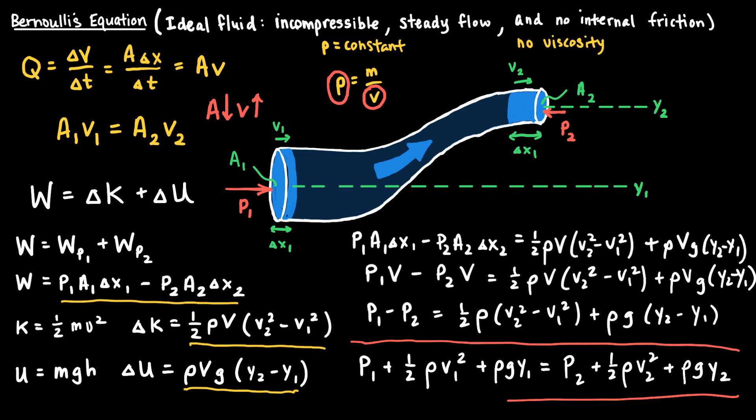I hope you now have intuition about where each term comes from. The terms that look like ½mv² are related to the change in kinetic energy of the fluid. The terms ρ·g·y1 and ρ·g·y2 relate to the change in the height of the fluid. And P1 and P2 are not just pressures — they are related to the work being done on the fluid by the fluid that comes behind and in front of it.